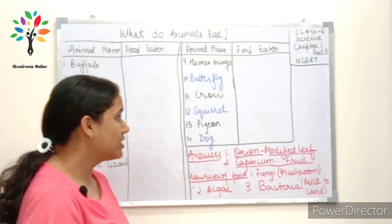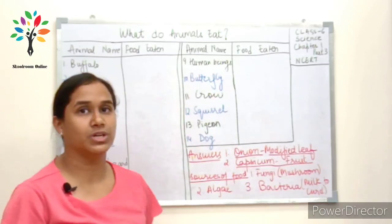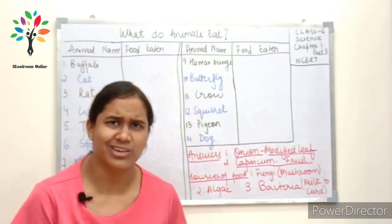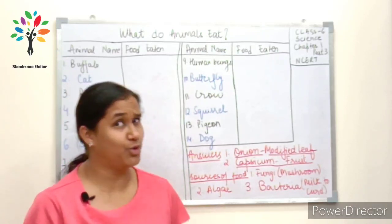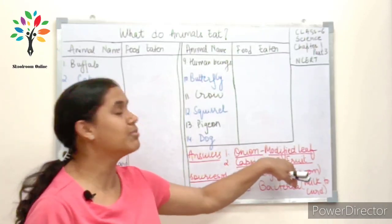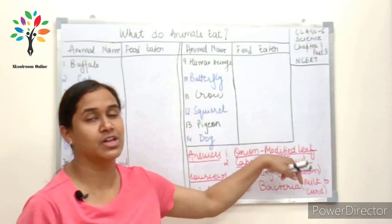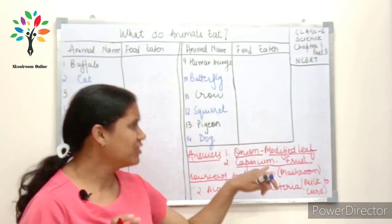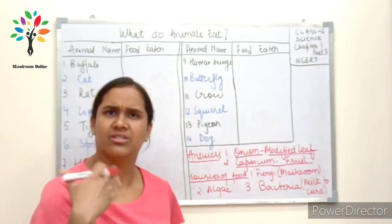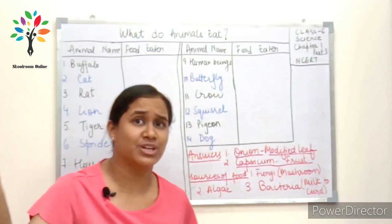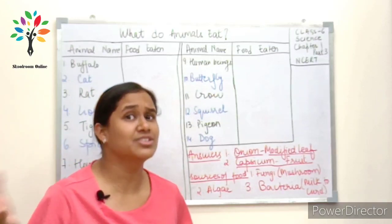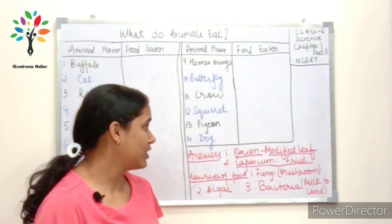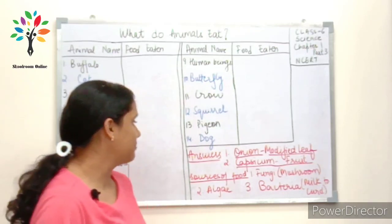What is a modified leaf? Onion does not look like a leaf, does it? That's why it's called a modified leaf. Further in your future classes you will learn more about modified leaves. For this class, this is enough.